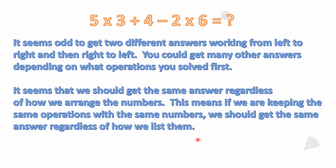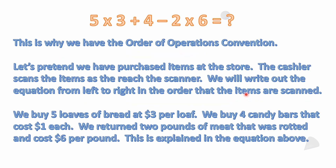It seems really odd to get two different answers working left to right versus right to left. You could get many different answers depending on which operations you solve first. It seems like we should get the same answer regardless of how we arrange the numbers — if we're keeping the same operations with the same numbers, the result should be consistent.